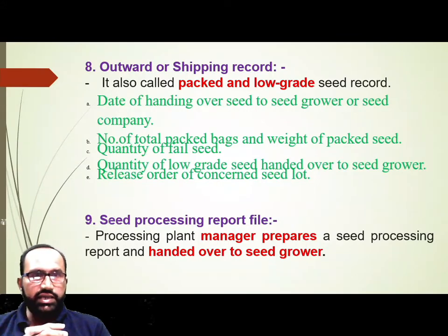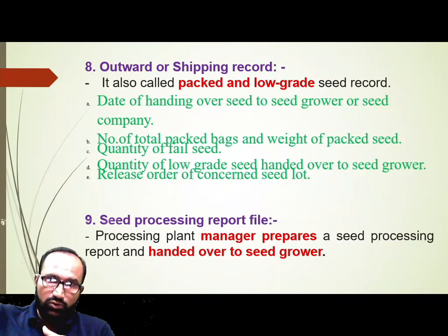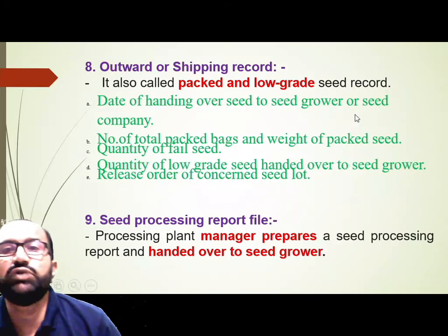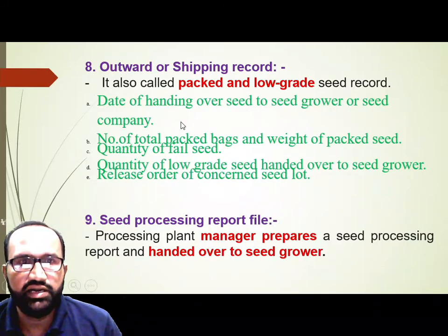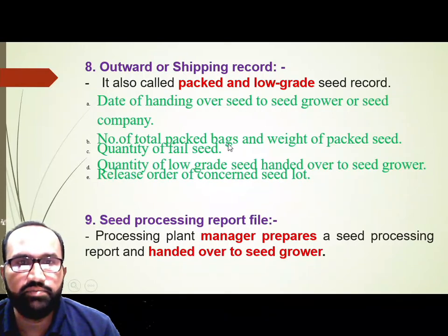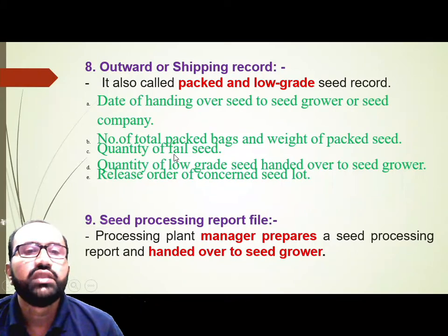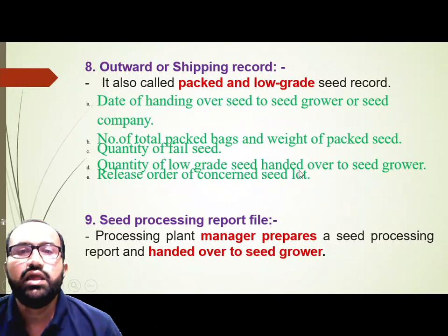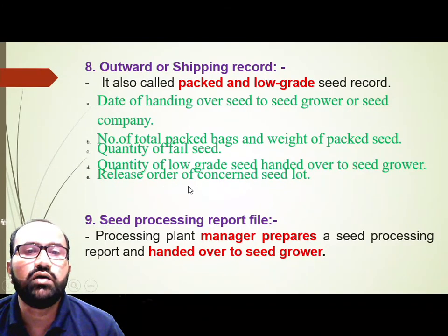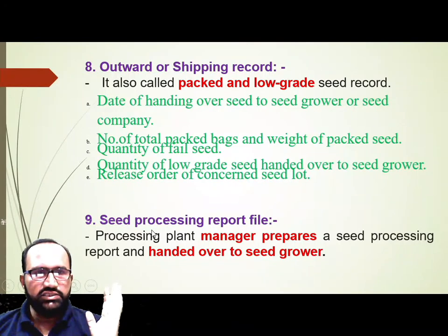Next is the Outward or Shipping Record, also called the Packed and Low-Graded Seed Record. It records how much seed was packed and how much was low-graded. Low-graded seed is mentioned for market sale. It includes: date of handing over seed to seed grower or seed company, number of total packed bags and weight of packed seed, quantity of failed seed, quantity of low-graded seed, and details of seed handed over to the seed grower.